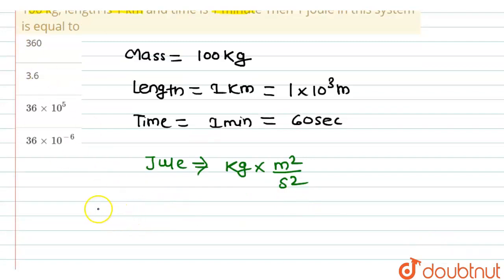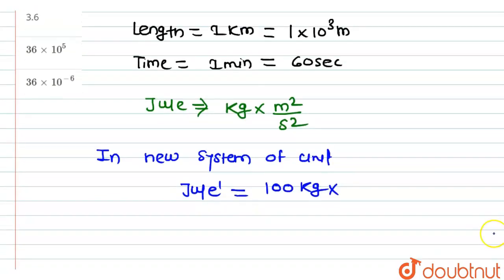Joule dash will be equal to, here the unit of mass is 100 kg, so kg will be replaced by 100 kg into meter will be replaced by 10 raised to the power 3 meter, so here 10 raised to the power 3 meter square